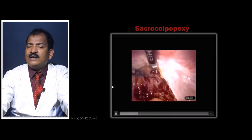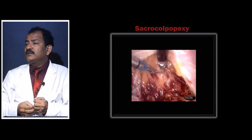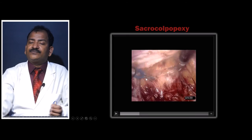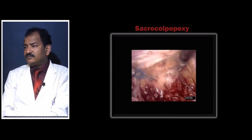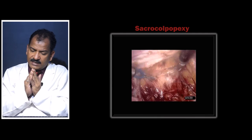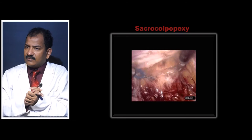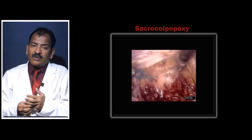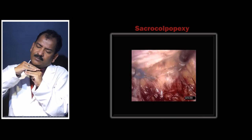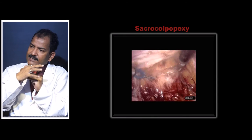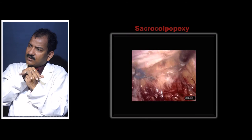Pararectal dissection is required because you cannot take a bite on the uterosacral ligament in vault prolapse — instead you take a bite on the levator ani. Just as in perineorrhaphy, the most important step is approximation of the levator ani, which keeps the vagina separate from the rectum. A mesh is placed; with no uterus to encircle and no uterosacral ligament, one corner of the mesh is fixed to one levator ani and the other corner to the other levator ani.